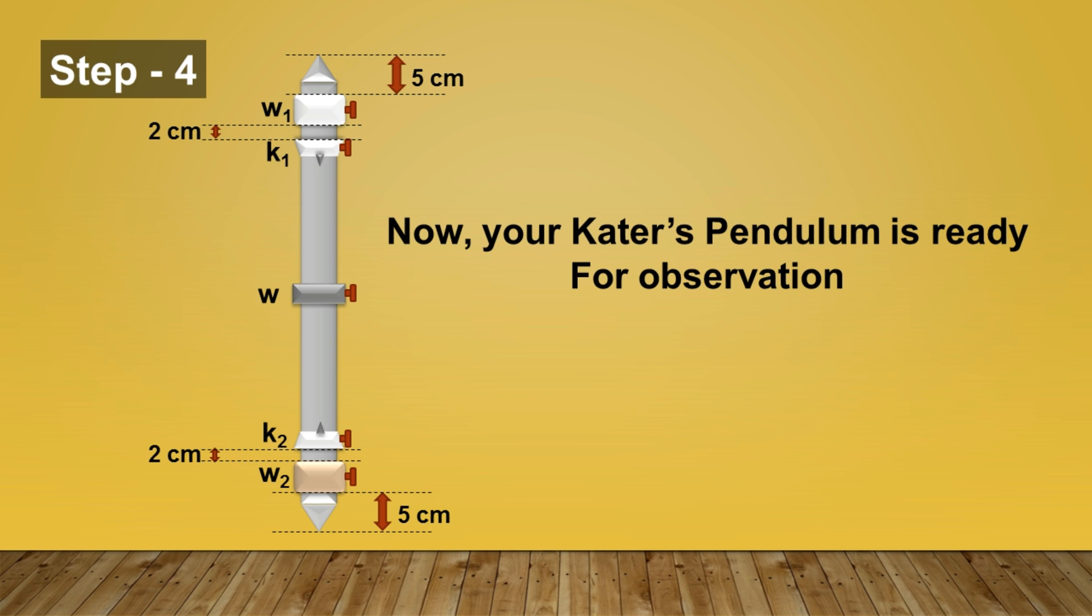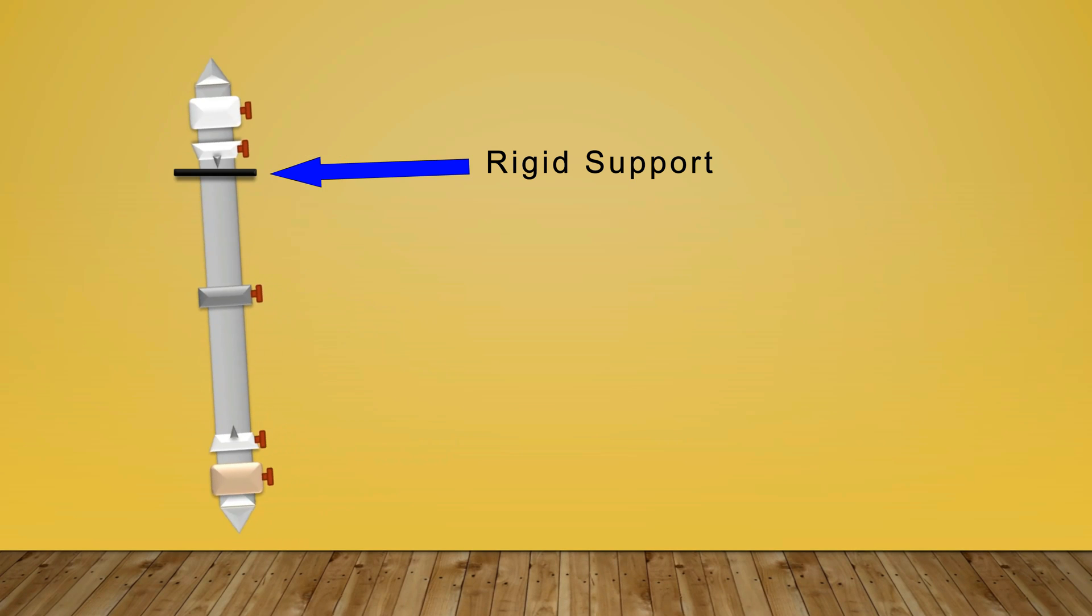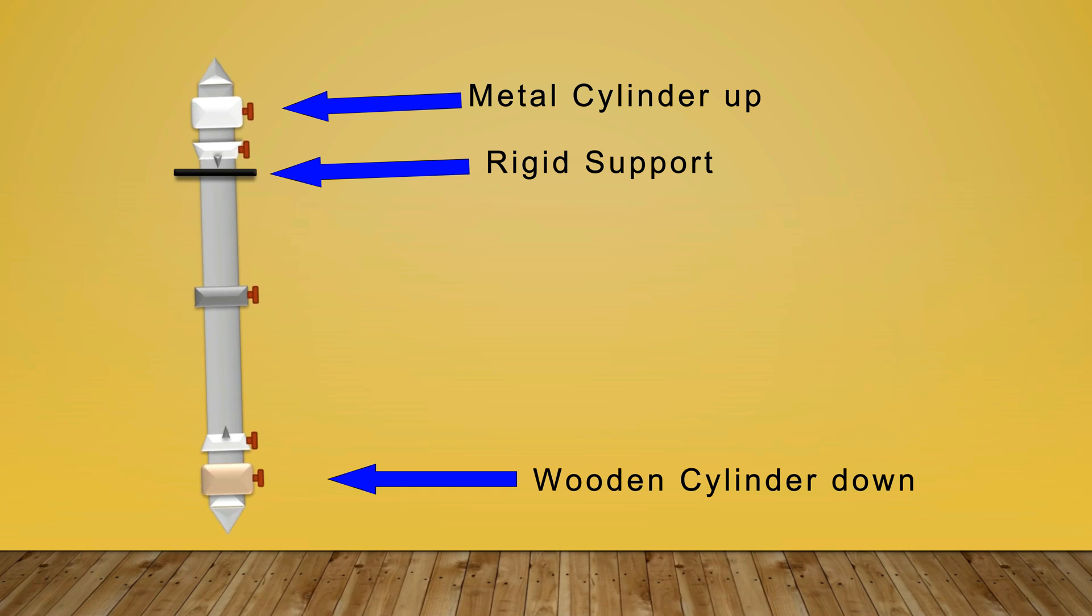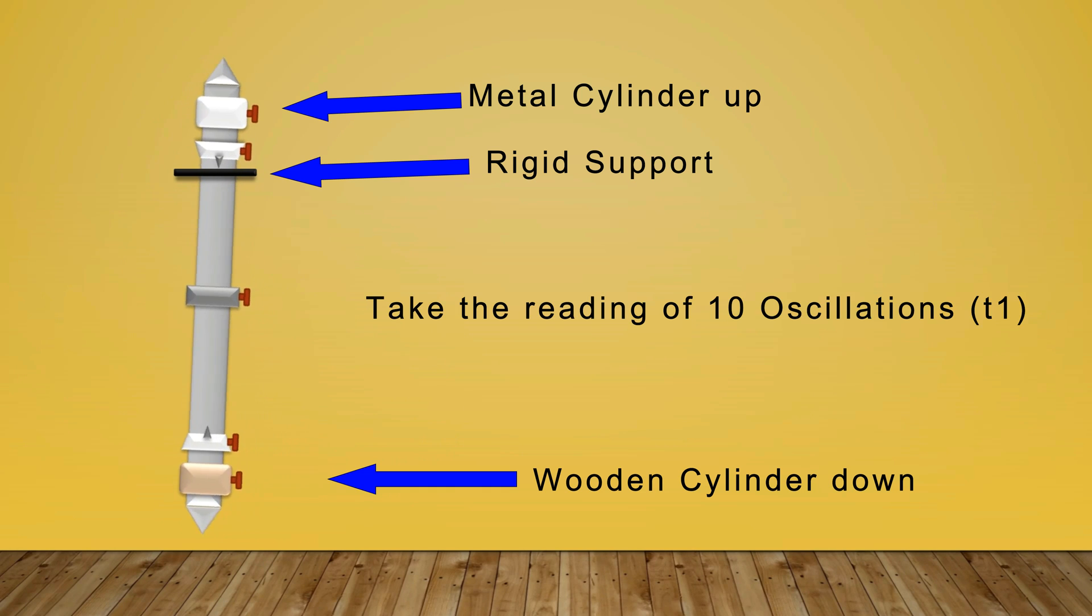Now you can hang this Kater's pendulum on a rigid support and observe the time for 10 oscillations. So first of all, keep the metal cylinder upside and wooden cylinder downside and take the reading of 10 oscillations. Call it as T1.